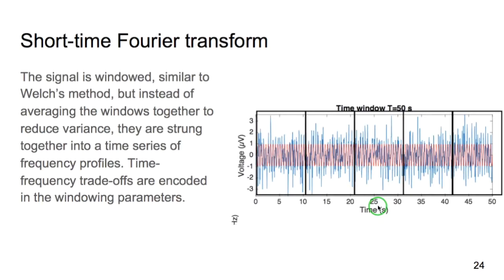In this method, the time frequency tradeoffs are encoded in the windowing parameters. So if you have long windows, you have less temporal precision and more spectral precision.